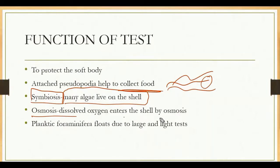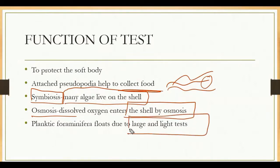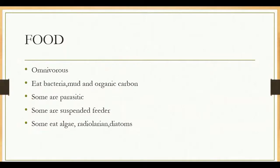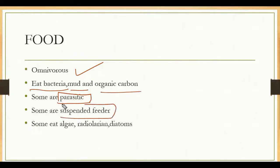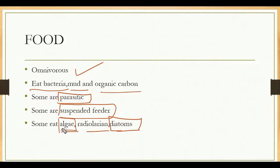Planktic foraminifera float due to their large and light test — they increase the size of the test and reduce density. Foraminifera are omnivorous, eating both plants and animals. They eat bacteria, mold, organic carbon; some are parasitic, some are suspension feeders, and some eat algae, radiolaria, and diatoms. If you like the video, please like and share it. In the next class, we will discuss the next chapter. Thank you.